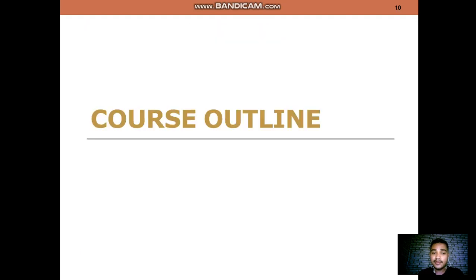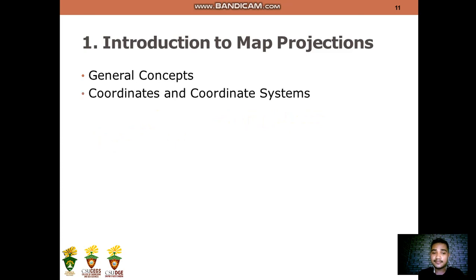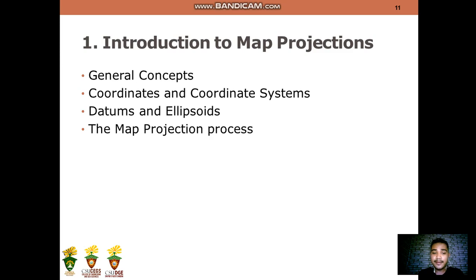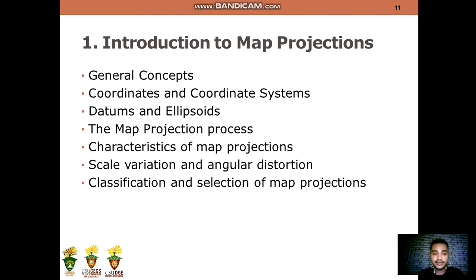Now let's go to the course outline. Topic 1 is all about introduction to map projections, which consists of general concepts, coordinates and coordinate systems, datums and ellipsoids, the map projection processes, characteristics of map projection, scale variation and angular distortions, and classification and selection of map projections.